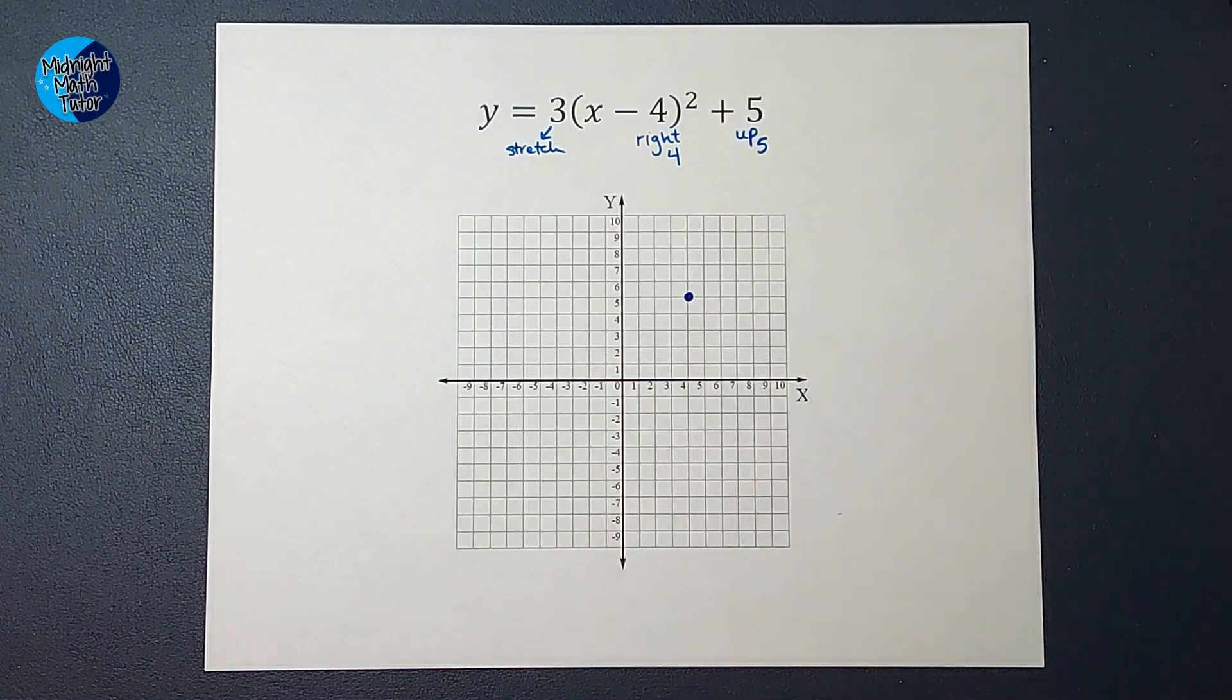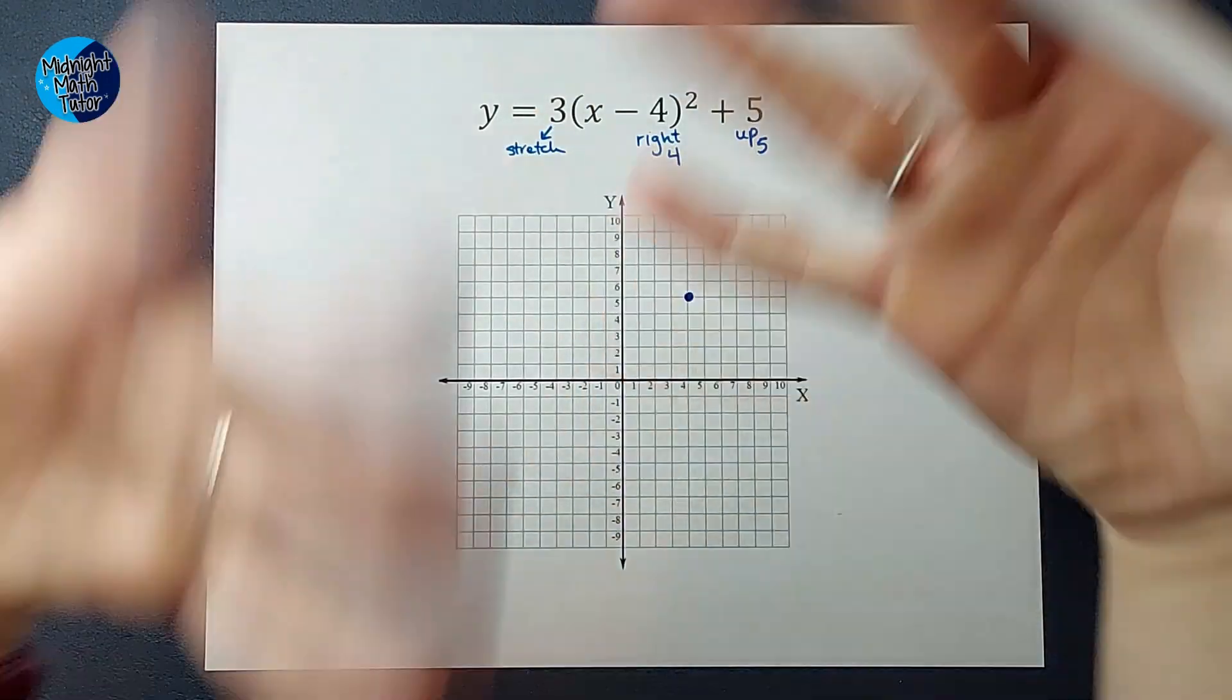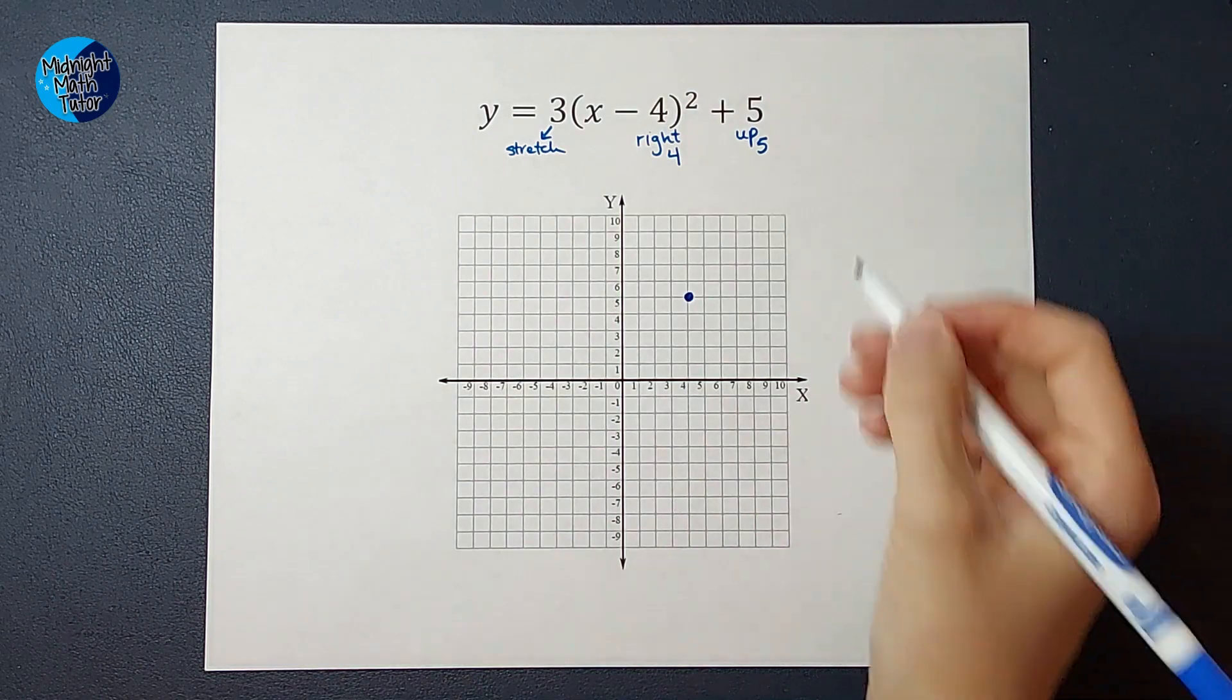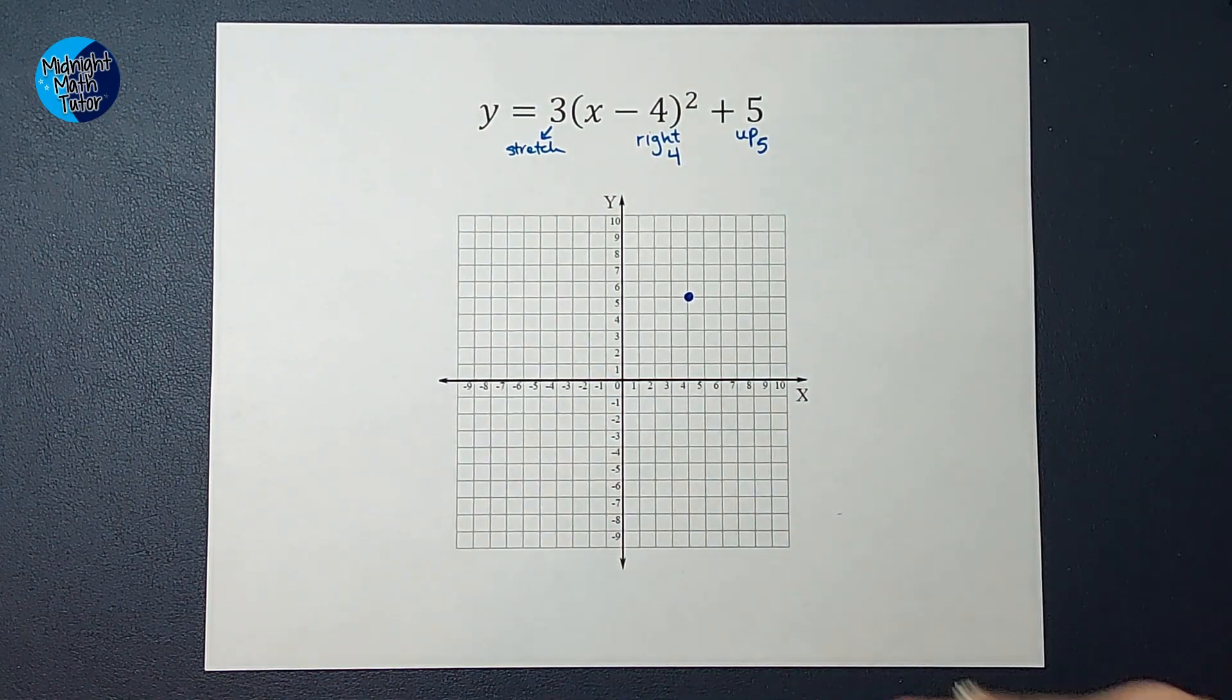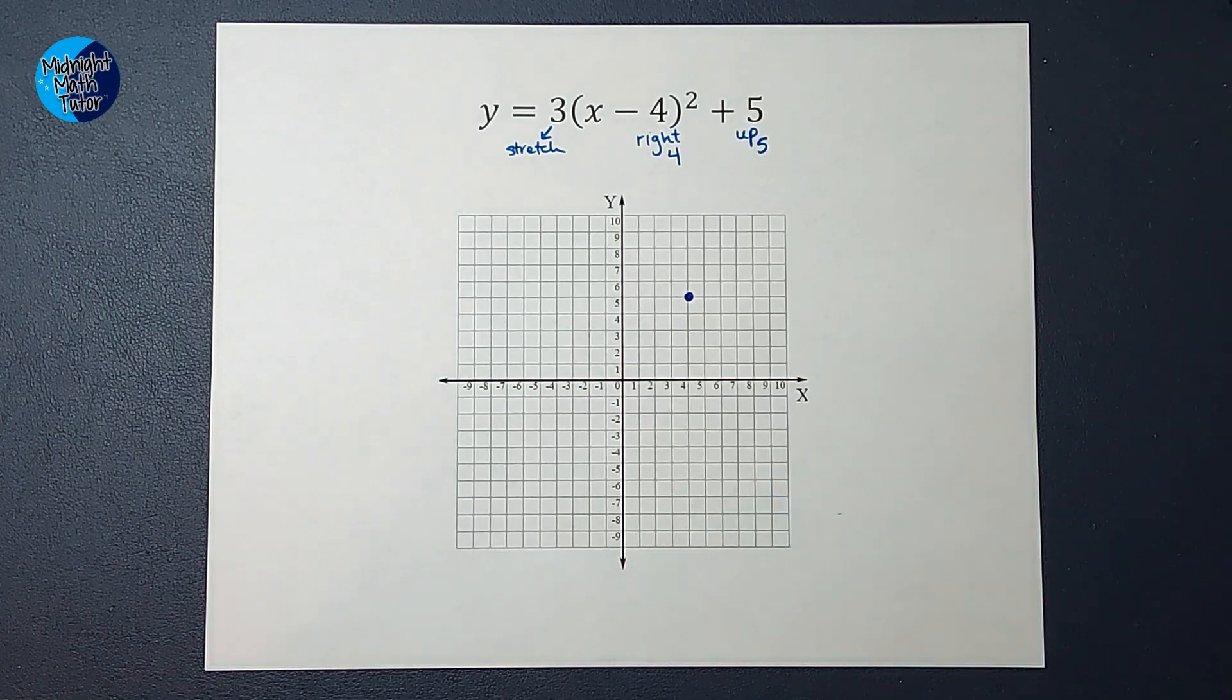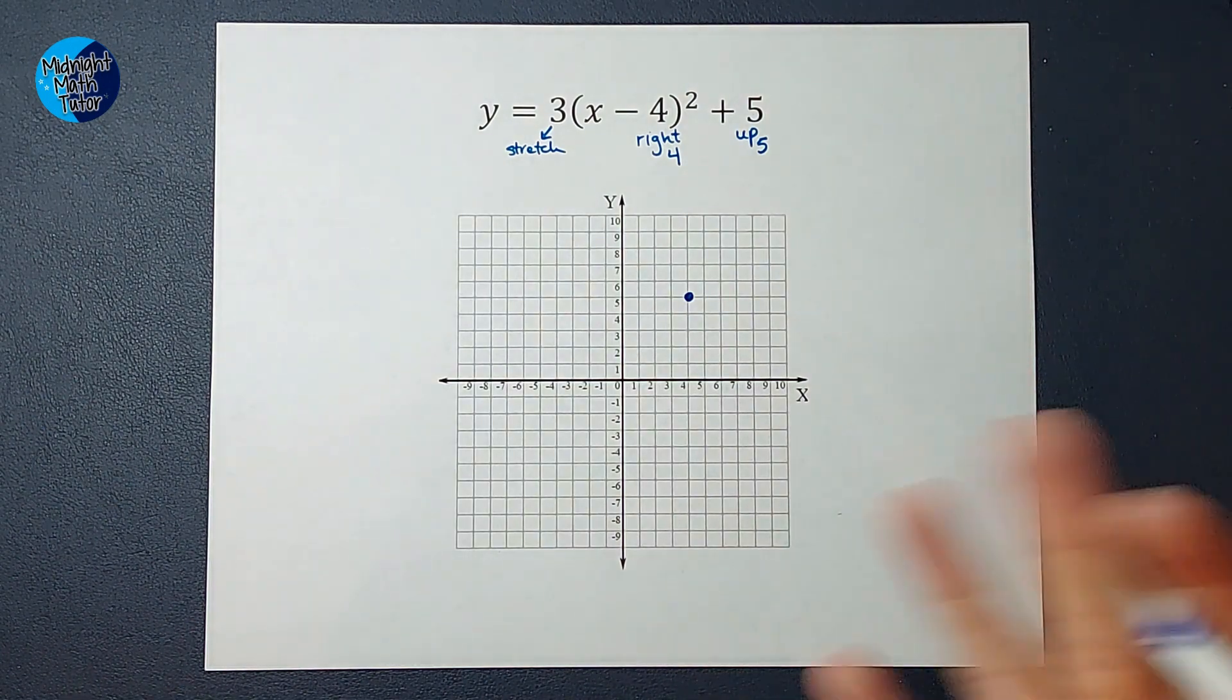Okay, a couple things. Some teachers might be okay with you just drawing a U signifying you know that it goes up, it opens up, and then writing a little note that just says that there's a vertical stretch of three. I had some teachers that that's just how they wanted me to show that I understood that, and they weren't too concerned about what my graph looked like as long as it was in the right direction.